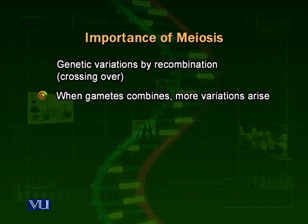The second benefit is that because of meiosis, half the number of chromosomes go to one gamete and then the gametes have to combine. As we know from the anaphase, in anaphase the chromosomes are arranged in homologous pairs.